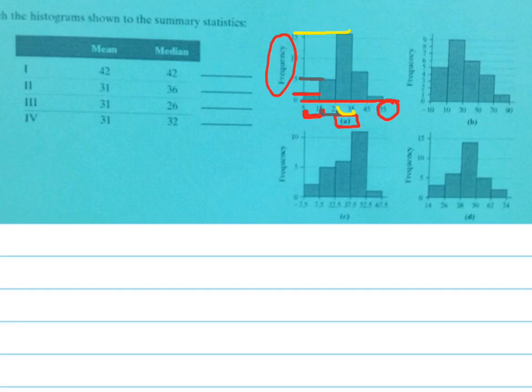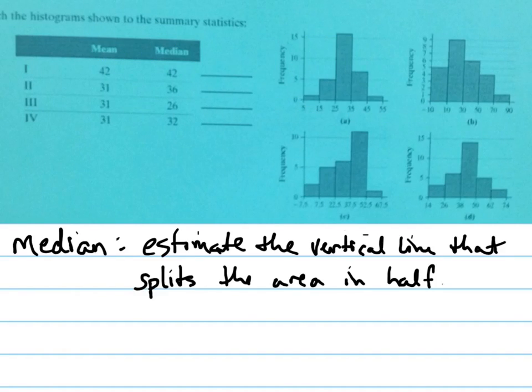And there's a couple key tricks to finding the mean and the median based upon a histogram. You want to be able to look at the picture and be able to quickly identify what maybe the mean and median are roughly. The median is best seen by estimating the vertical line that splits the area in half.